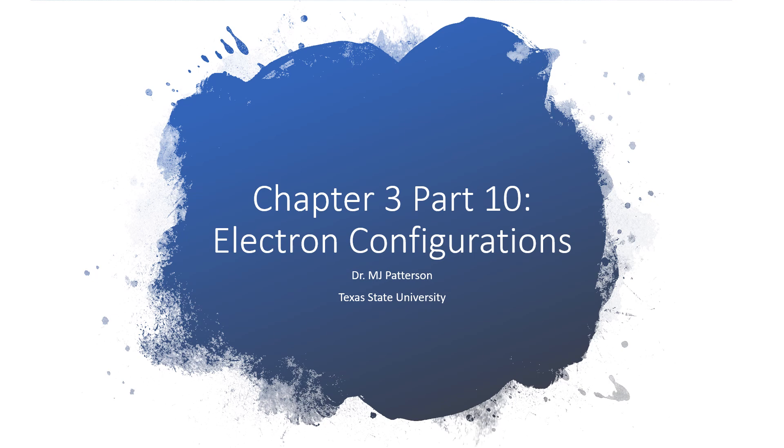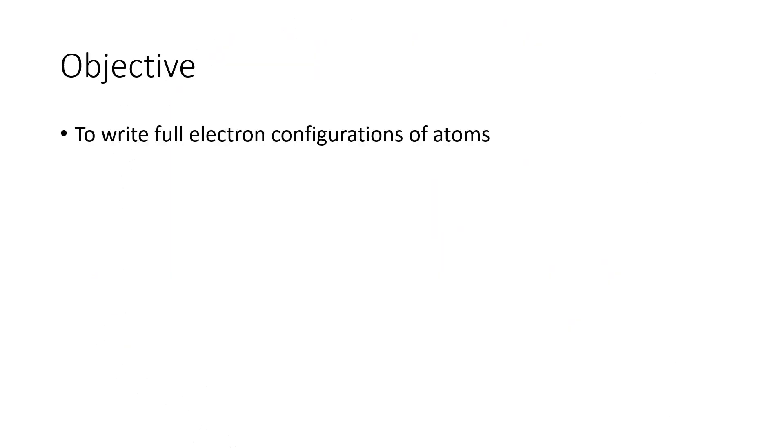Hi, Bobcats. This video will look at the process of writing electron configurations. Our objective is to write the full electron configuration for an atom. In the next video, we'll look at writing a short version, which is known as the noble gas version.